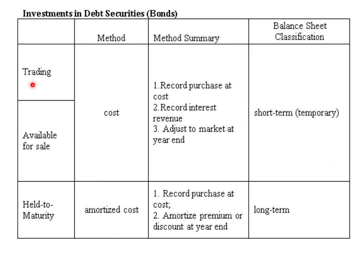Trading securities are bought with the intention to speculate on a short-term gain — the price of a bond will go up, we sell them, and we're done. Those will fall under short-term investments or short-term assets. Available for sale are somewhere in between trading and held to maturity, and therefore most likely they will be longer than a year.